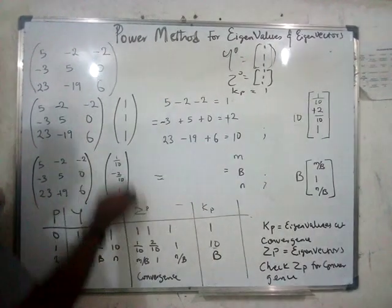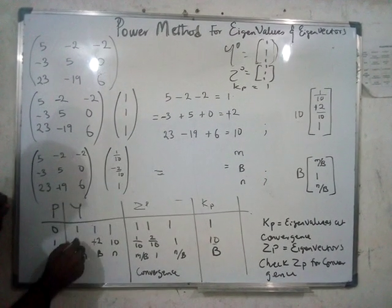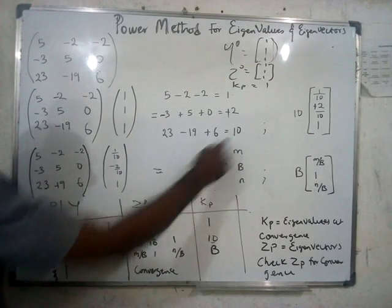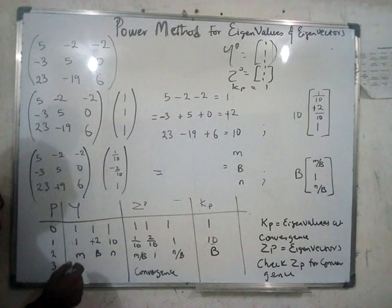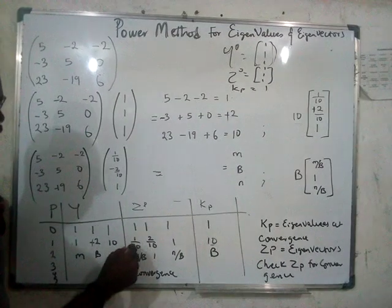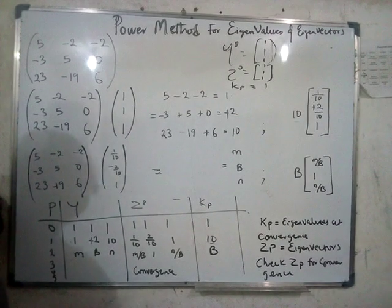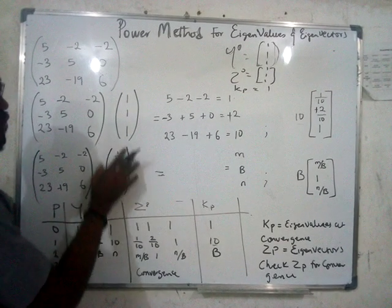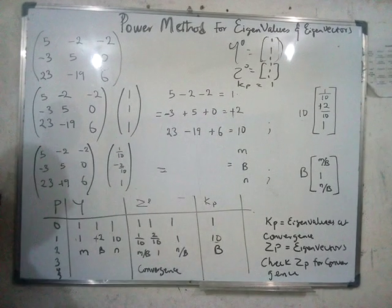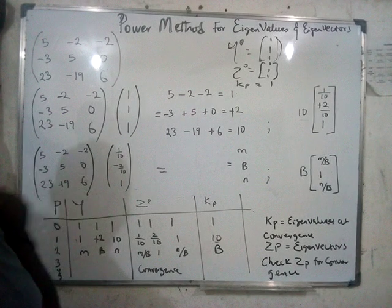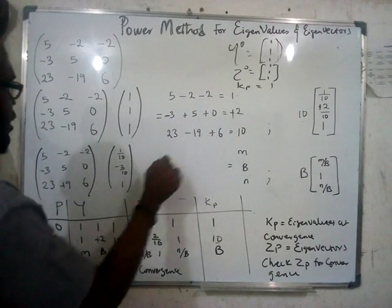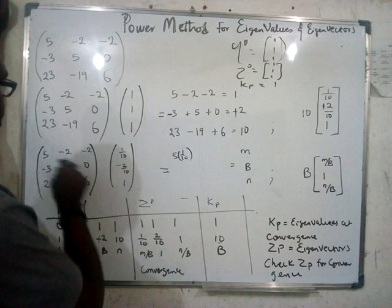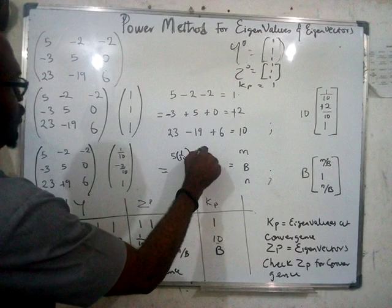You repeat the iteration again. This time around you use the values that you have here as your new y. The values here — one, two, ten — will be your new y. For the zp you record these values: one over ten, two over ten, and one. Then you put your ten. Now you do a new iteration by putting this value as your current value. You do the same thing: five times one over ten, plus minus two times two over ten which gives us four over ten.